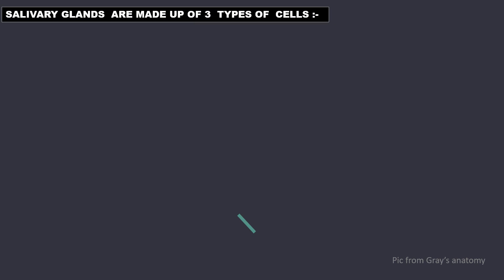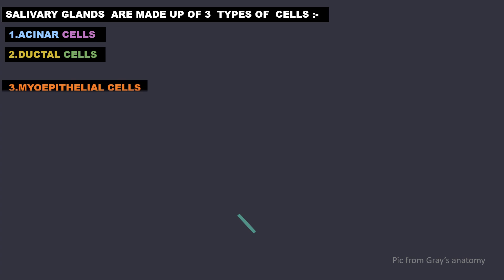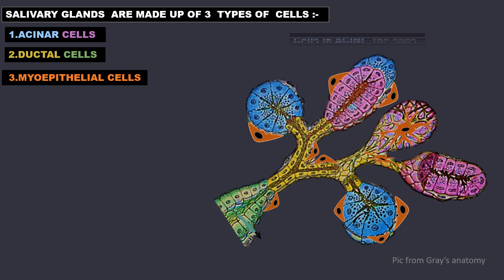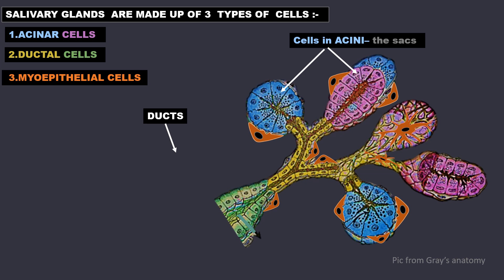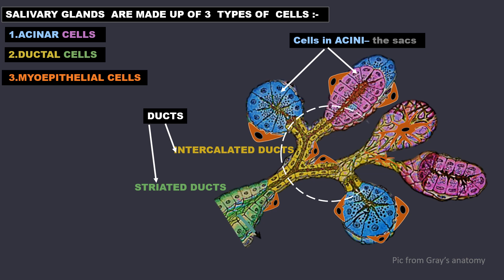Salivary glands are made up of three types of cells: acinar cells, ductal cells and myoepithelial cells. The acinar cells are present in the acini. Ductal cells are present in ducts — intercalated ducts, shown in the yellow area, and striated ducts, shown in the green area. Intercalated means present in between, and as you can see they are present in between the acinar cells.